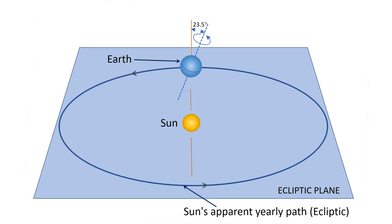So why do we call it the apparent path? We all know that it is the Earth that revolves around the Sun, but from the Earth it feels as if the Sun is moving along this path, and hence we call it the Sun's apparent path.